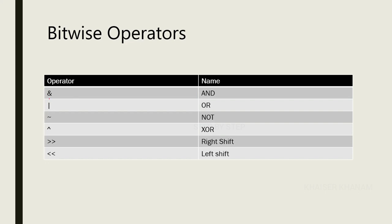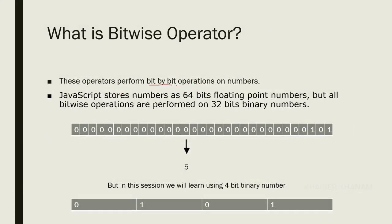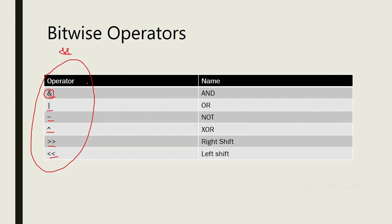Now let's see the types of bitwise operators. In our previous session we saw logical AND represented by two ampersands (&&), but the bitwise AND operator uses only one ampersand (&). We also have bitwise OR (|), bitwise NOT (~), bitwise XOR (^), right shift (>>), and left shift (<<). These are the operators which will perform bit by bit operations on numbers.